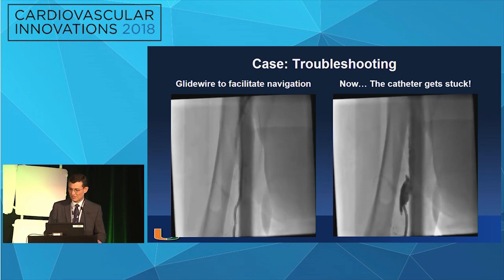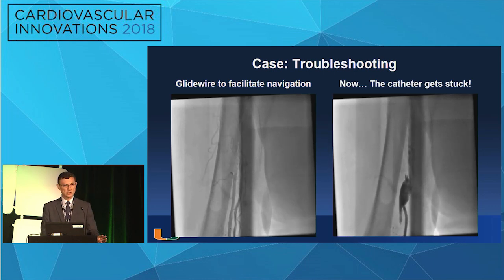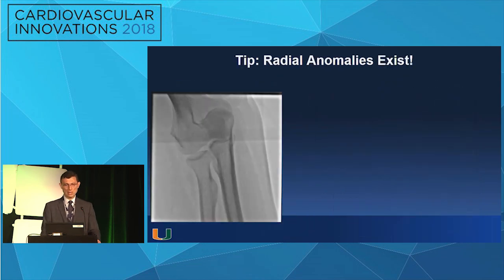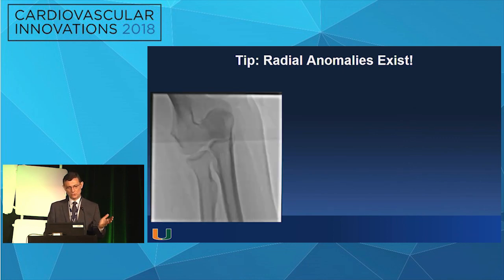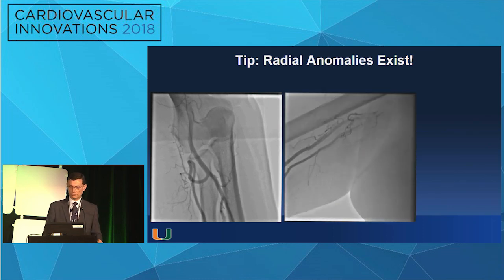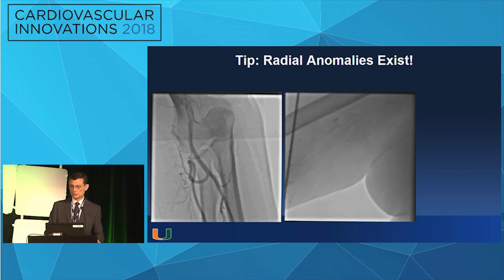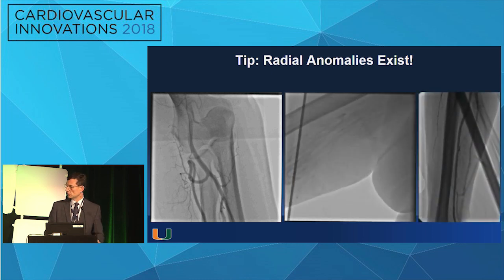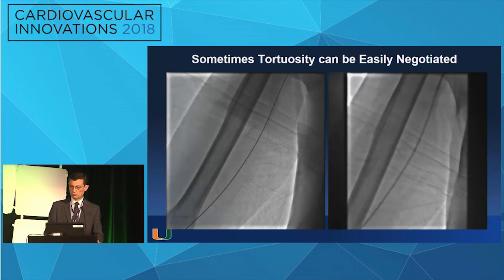I take another limited angiogram. When you see this image, please don't panic. Don't pull everything out. You're a little committed now. You need to understand that radial anomalies exist. This is a loop you don't want to navigate — if you navigate this loop, you're going to spend so much time, just cross over to the other side. The most common anomaly is the radial coming off the upper side of the brachial artery. In renal patients, you'll be dealing with calcified vessels and smaller radials. Sometimes tortuosity can be easily negotiated just with a wire that straightens, and you finish the case.